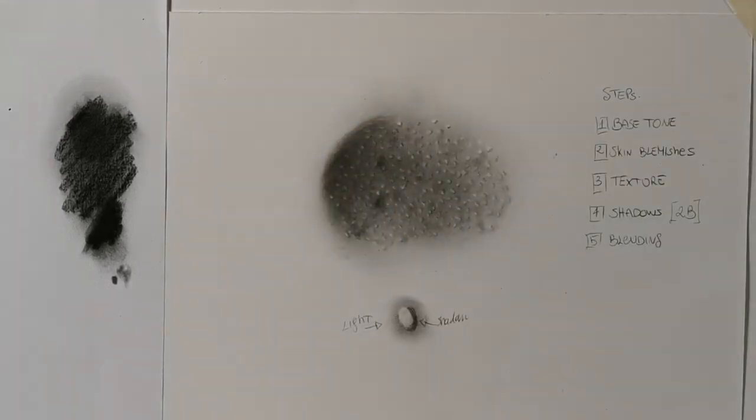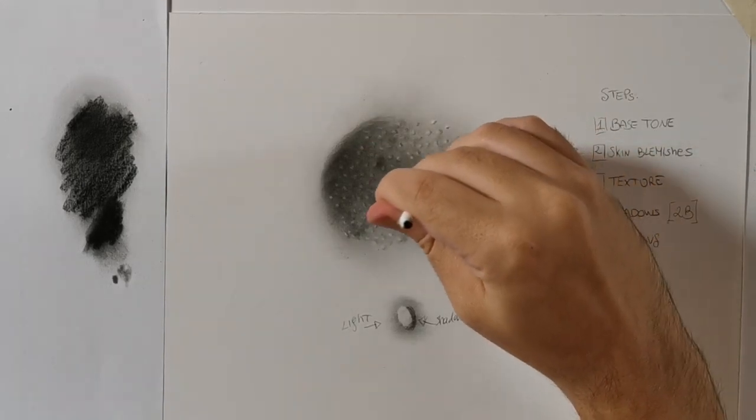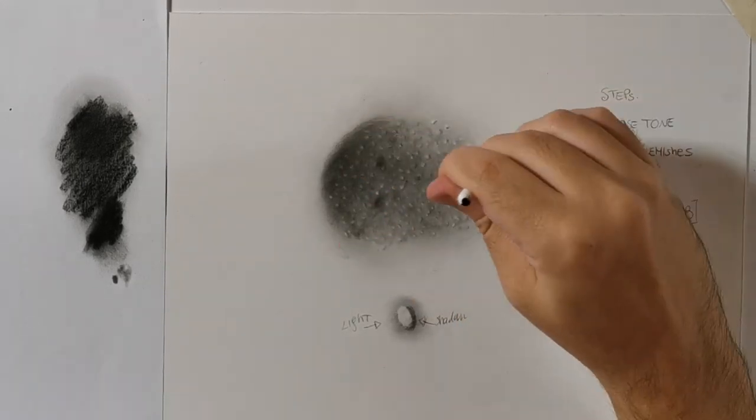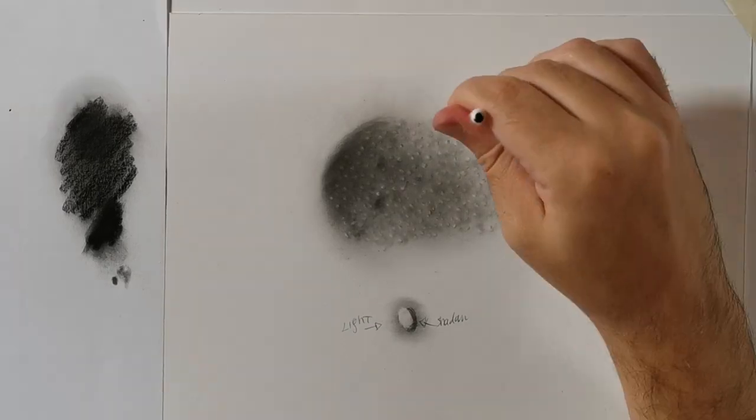After the Q-tip, you can also use a small brush to make everything smooth and soft and also to reduce the tonal values that seem too dark to you.